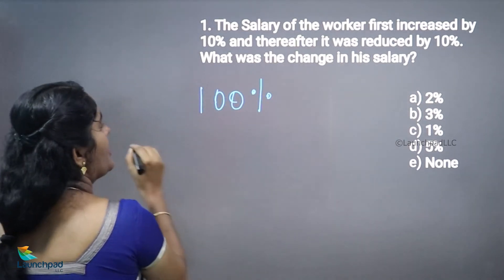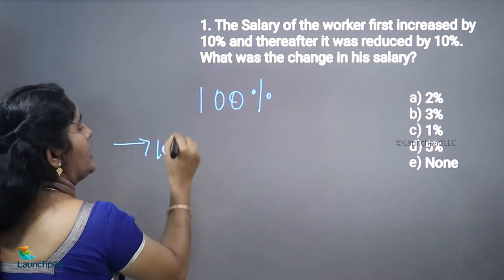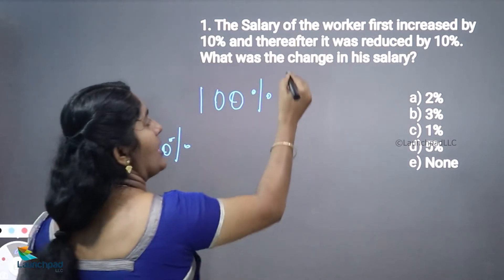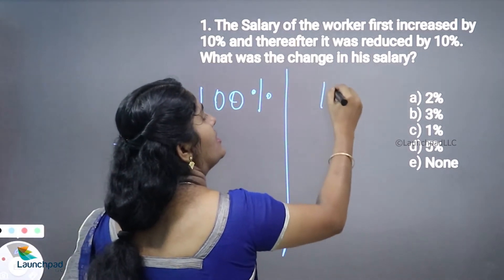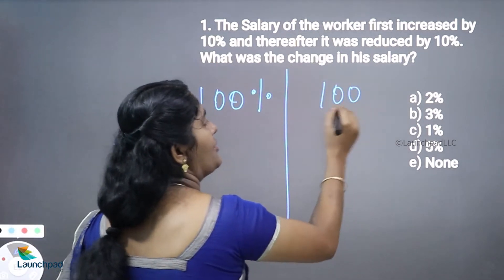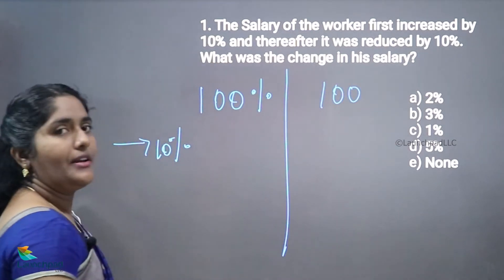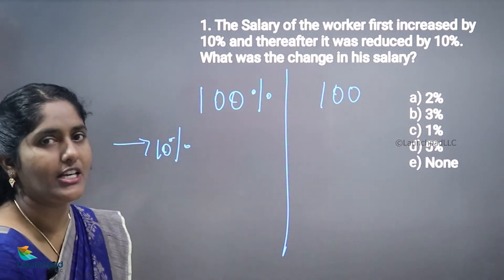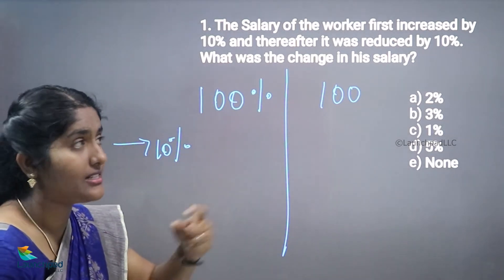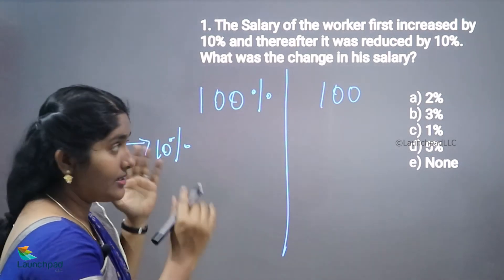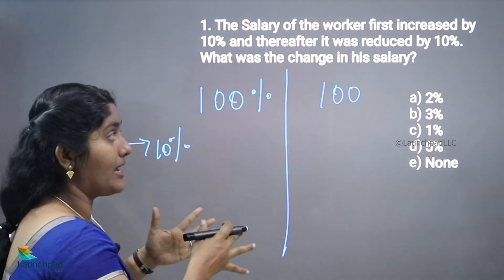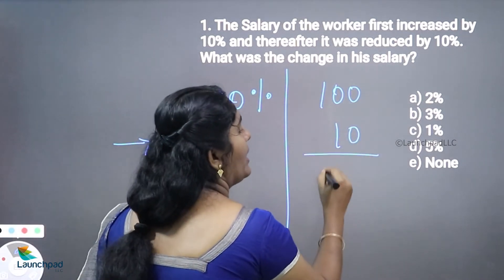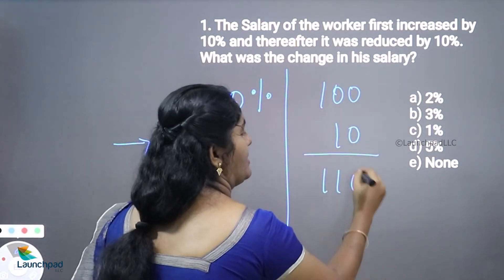If 100% is increased by 10%, we can consider the initial salary as 100 rupees. The 100 rupees increased by 10% means what is 10% of 100? You can tell the answer immediately — that is 10 rupees — so the new value is 110 rupees.